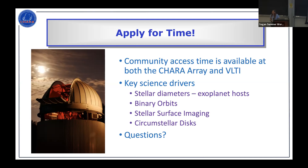Question: Can you use CHARA or VLTI to search for planets around single stars when the planet is not already directly imaged? That's going to be difficult for single stars — at CHARA we can't do it because we don't have the dual-field mode. At VLTI, if there's a star within about 30 arc-seconds, you might be able to do it, but if there's a star within the small field of view you might be able to measure relative positions.